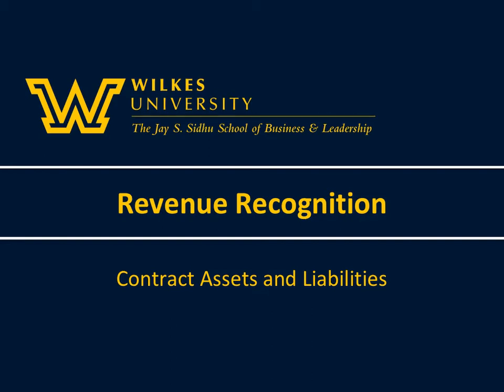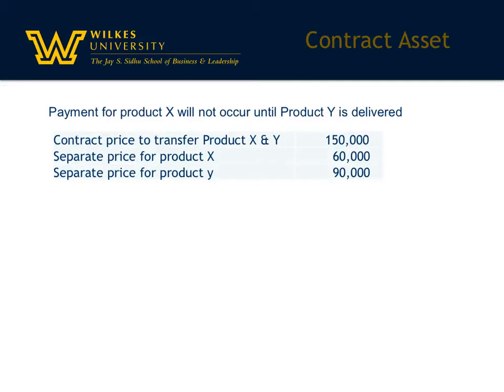Here is an example of contract assets and contract liabilities and recording them with the revenue recognition principle. There are two types of contract assets. The first is straightforward — these are the journal entries you've been performing all along. It's when a company has an unconditional right to receive their asset, usually accounts receivable, because it has already satisfied its performance obligation.